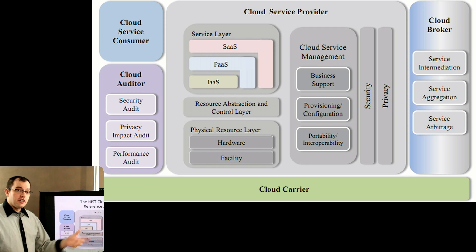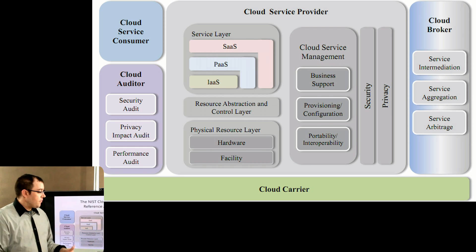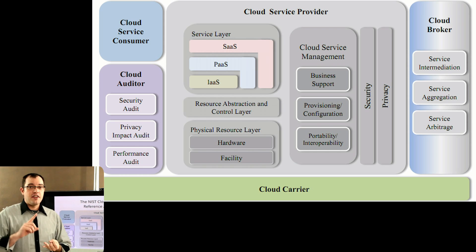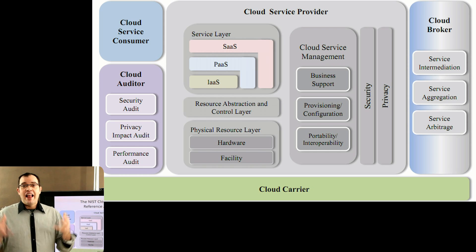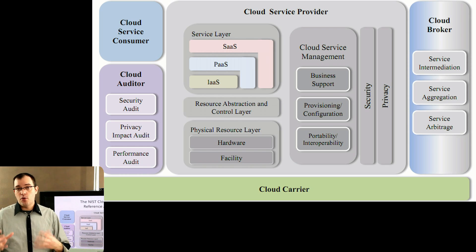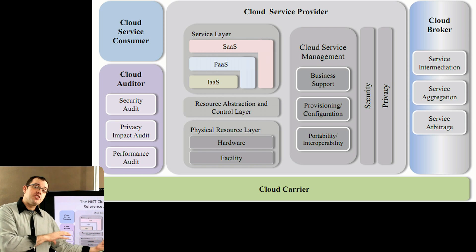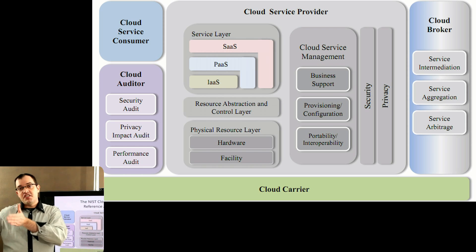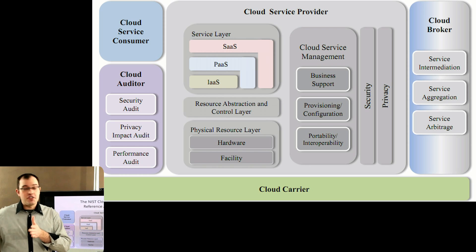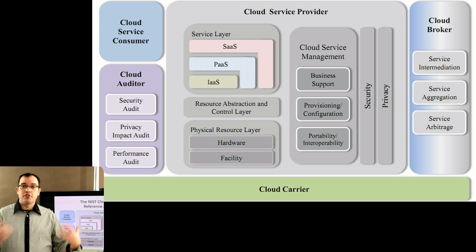As a platform as a service, each of these roles appears again. Your business support is your billing and infrastructure — the ability to say how much do I want to spend on this platform as a service. If you're talking about Google App Engine, you're setting a daily budget and tweaking the numbers to say how many instances you're willing to have and what quality of service you want. That becomes part of provisioning as well, because each of those business functions changes how much you're going to spend, and as you change your performance numbers you're changing the provisioning and configuration.